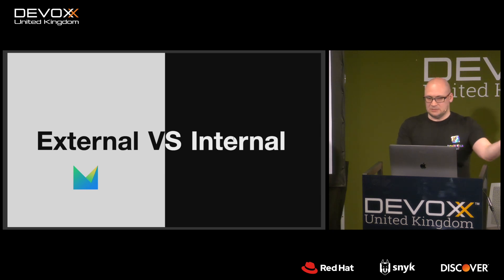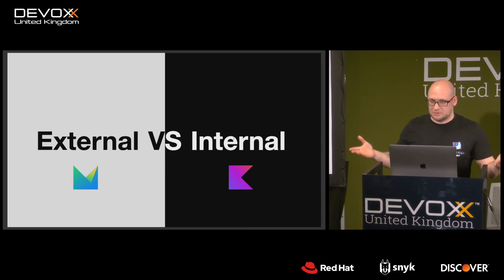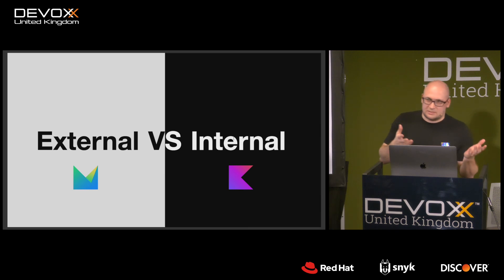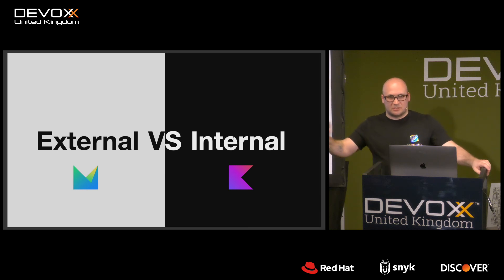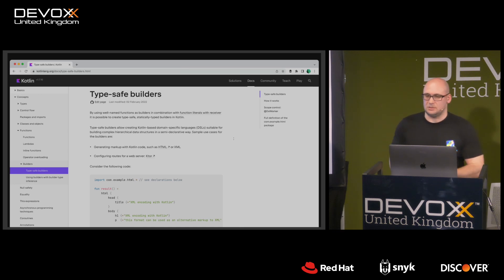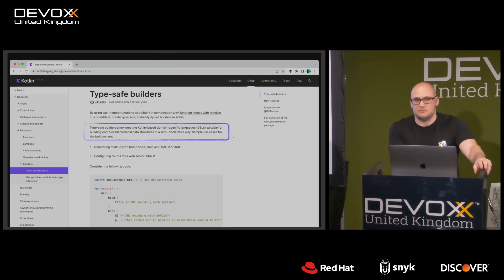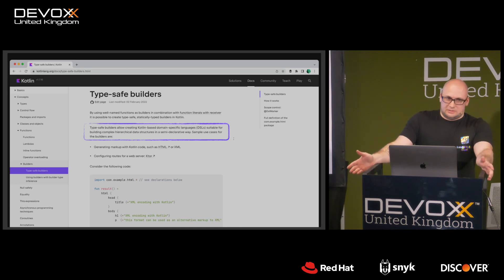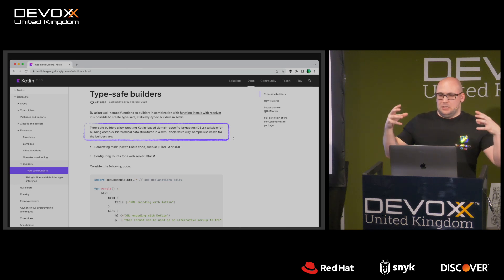With internal DSLs you don't have to create a grammar, parser, or code generator — you're just limited by the expressiveness of the host language, which in our case is Kotlin. You can build DSLs in other languages like Java or Scala; they will just look like those languages. Idiomatic use of the language equals DSL. In the Kotlin documentation, the only mention of DSLs is in the article on type-safe builders — it's just thematic use of a set of language features that work well together.